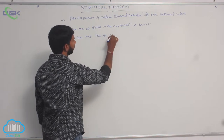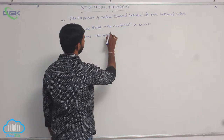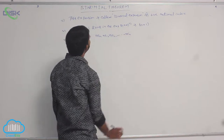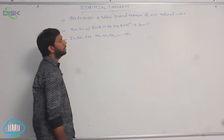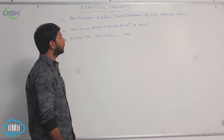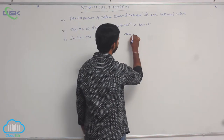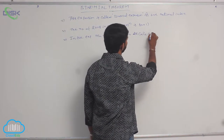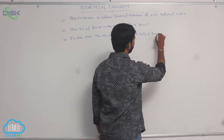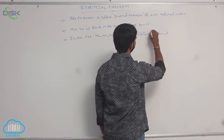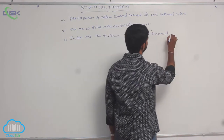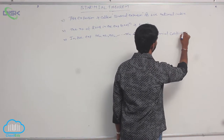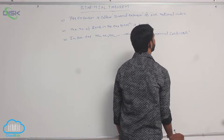In the expansion, nC0, nC1, nC2, and so on up to nCn are called binomial coefficients.